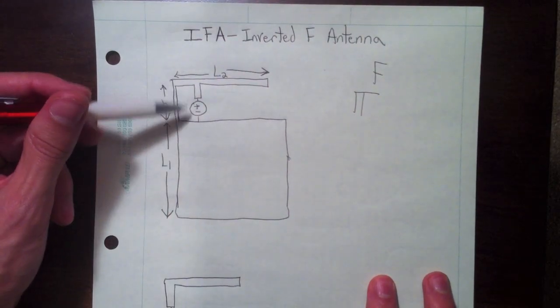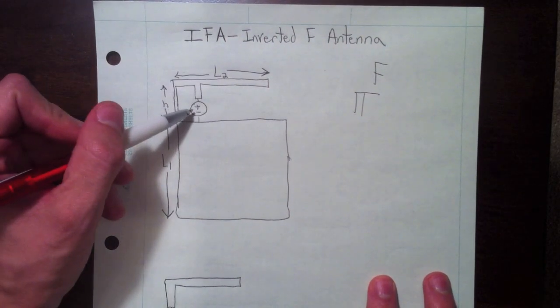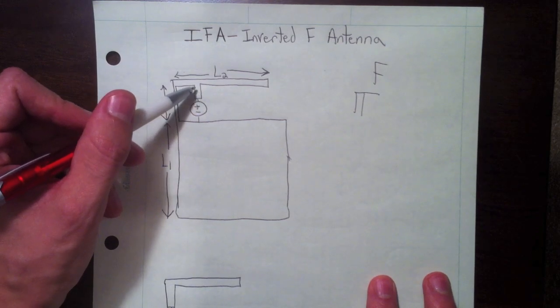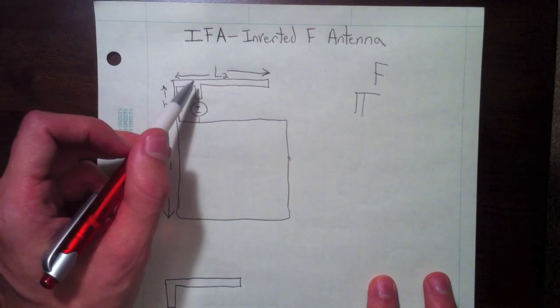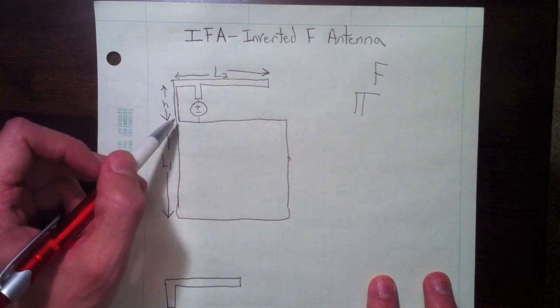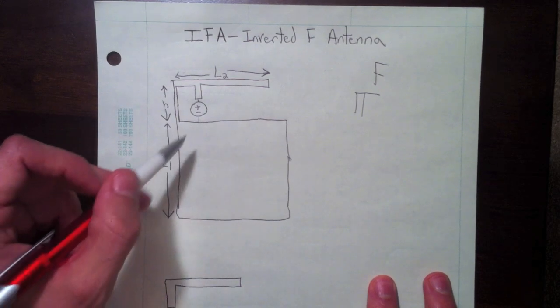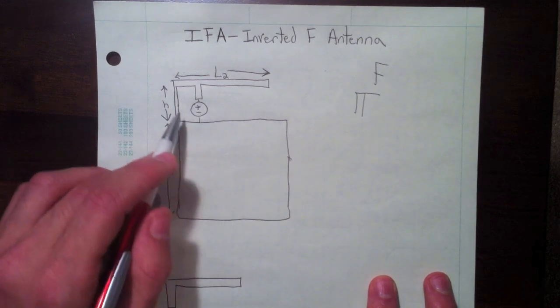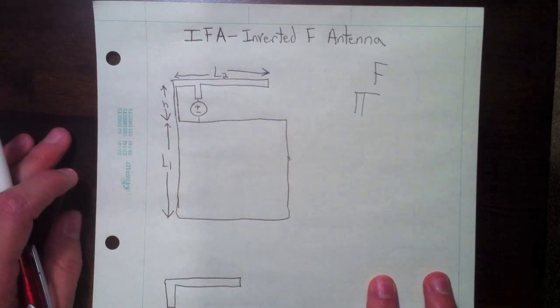Basically, an IFA is this inverted F that is fed at one of the arms here, has a top arm that goes this way, and a shorting arm that goes to the main ground plane here. This IFA sits on top of a large ground plane with this F-shaped arm rising out of the top.